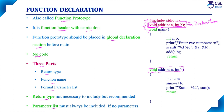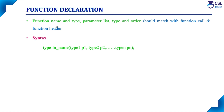The parameter list must always be included. If there are no parameters, simply specify an empty bracket, which represents void. When considering the function declaration, the function name, return data type, parameter list, type of parameter, and order of parameters must all match with the function call and function header.